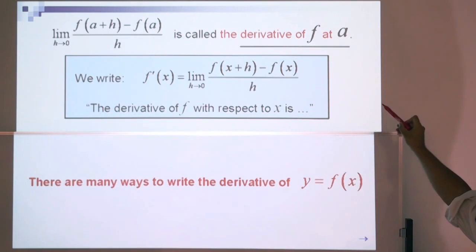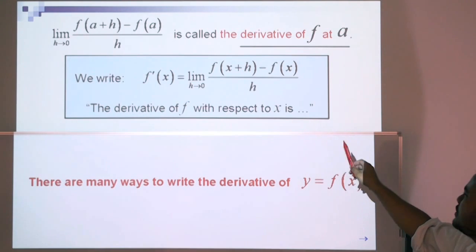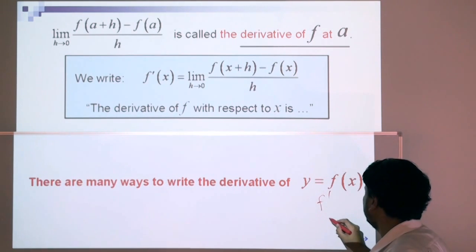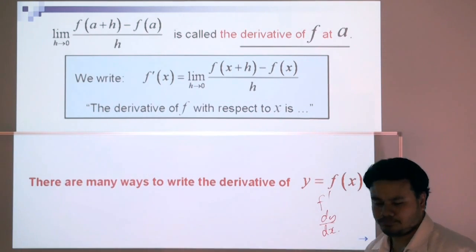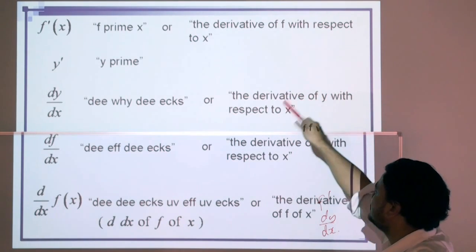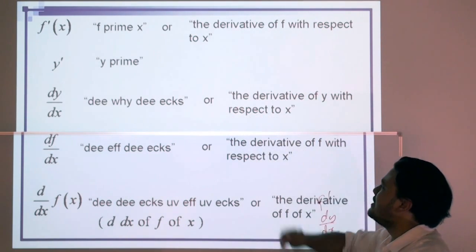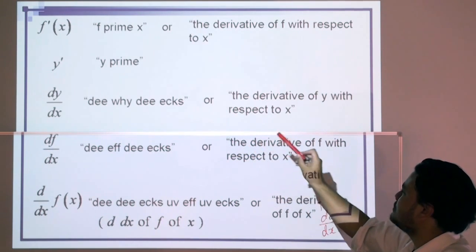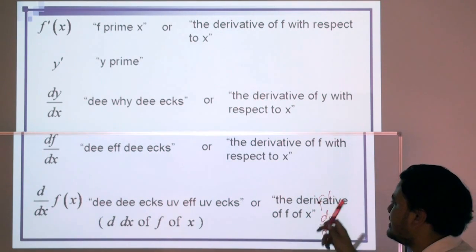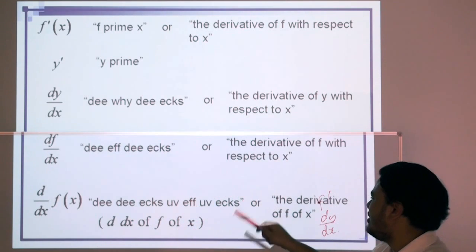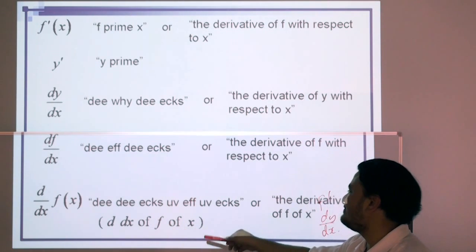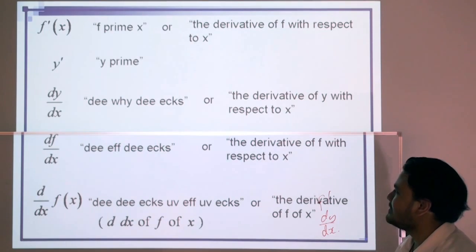Let's look at the formula again. That formula is called the derivative of f at a. We write the derivative of f with respect to x as f dash or dy over dx. There are many ways to write the derivative: f dash x or f prime x, y dash or y prime, dy dx or the derivative of y with respect to x, df dx, and d dx of f of x.